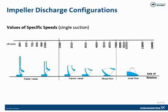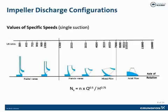The lower values, 500 to 1,500, pertain to the geometry associated with radial vane type impellers. The middle values, 1,500 to 7,000, are typical for Francis vane and mixed flow type impellers. Higher values, 7,000 to 15,000, are typical for axial flow type impellers. Note that as we progress from left to right, the impeller inlet approaches the size of the outlet for the impeller. Here's the equation for specific speed.